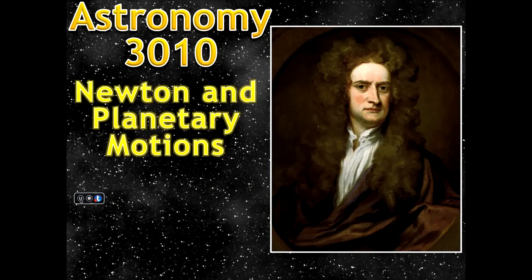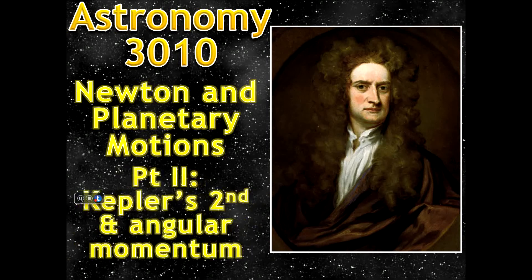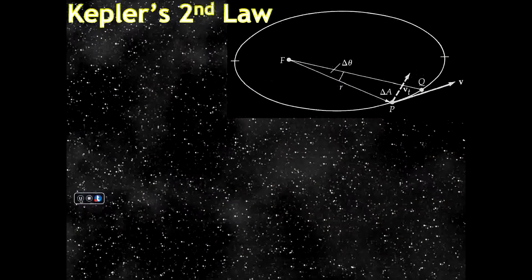The next segment we're going to do is talking about Newton and Kepler again, only this time we're going to look at Kepler's second law and how that relates to angular momentum. In order to do this we have to set up our system. So here we have a star — in this case let's consider it to be the Sun — at the focus of an ellipse.